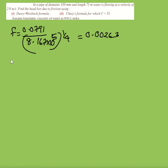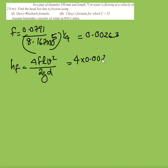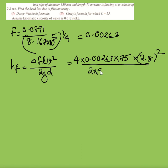Now substituting into the Darcy-Weisbach formula: HF = 4 × 0.00263 × 75 × (2.8²) / (2 × 9.81 × 0.35). This gives HF = 0.9 meter.